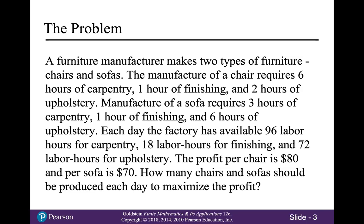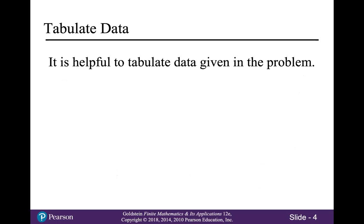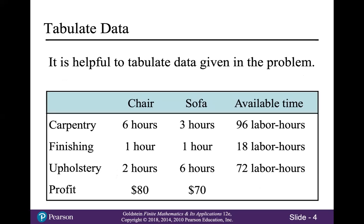So let's talk about how to set this problem up. Obviously it sounds very complicated, but it turns out it's not that hard — it is a little time consuming. First, it's helpful to tabulate the data given in the problem. We put it in the form of a table. Across the top, we write down the things that we are manufacturing. Down the side, we write the resources that we have a limited amount of. And then we put the profit on the bottom.